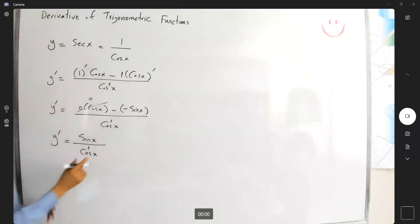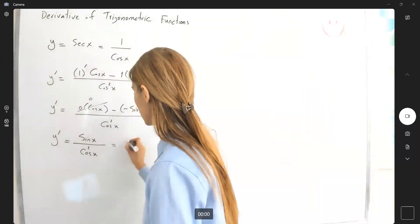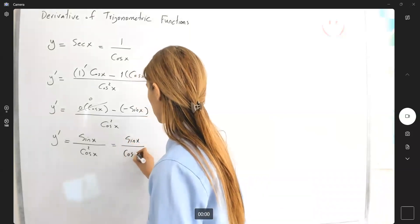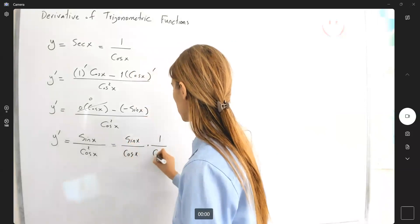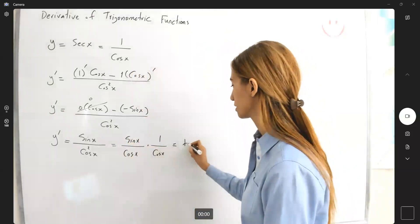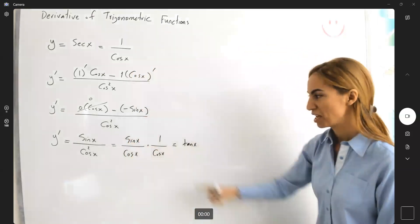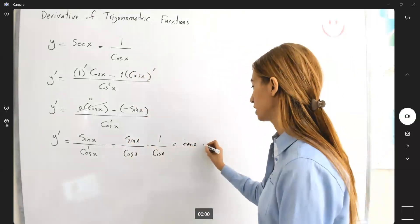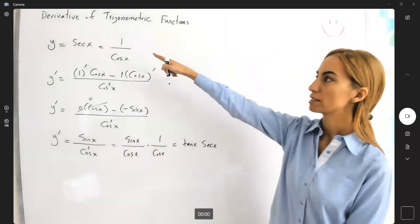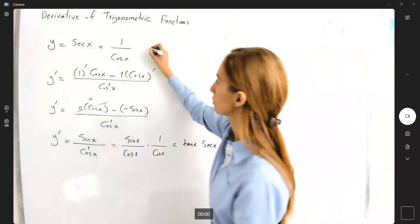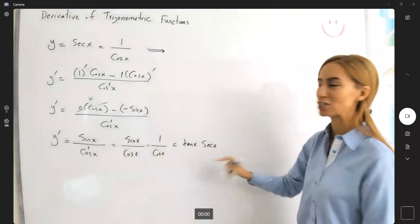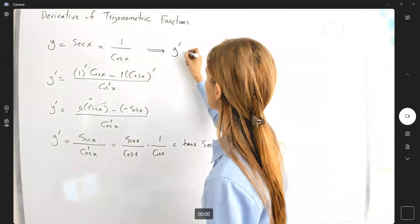Simplify this. This can be written as sine x divided by cosine x times 1 over cosine x. Sine divided by cosine is tangent by definition, and 1 over cosine is secant of x. So the derivative of secant is secant times tangent. The order is not important.